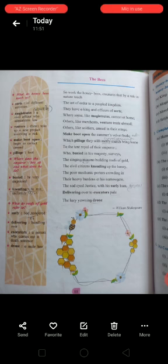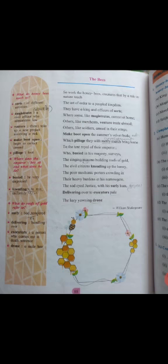Make a boot upon the summer's velvet buds which pillage they with merry march bring home. Merry march means merriment. Buds meaning kali. Pillage means loot.